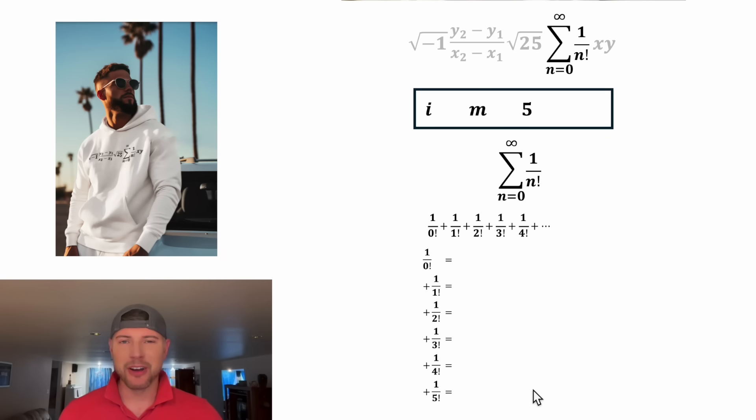This bottom one, 1 over 5 factorial, means the same thing as 1 divided by 5 times 4 times 3 times 2 times 1. And then this one, 1 over 4 factorial, would be 1 over 4 times 3 times 2 times 1. And then we have 3 times 2 times 1, 2 times 1, and 1. And then for 0 factorial, 0 factorial equals 1. If you want to learn more about this, there's so much content out there explaining this. Just look up 0 factorial equals 1 and you can see why that is.